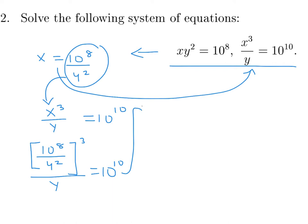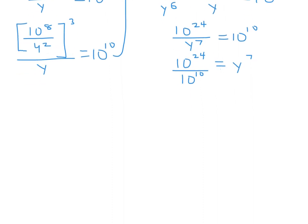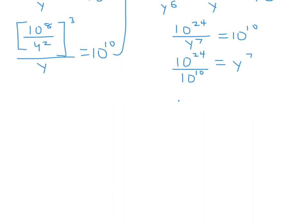Carefully, without making any algebraic mistakes, this becomes 10 to the power of 24 over y to the power of 6, and then bringing the 1 over y over gives 10 to the power of 24 over y to the power of 7 equals 10 to the power of 10. Bringing y to the power of 7 to the other side gives 10 to the power of 14 equals y to the power of 7.